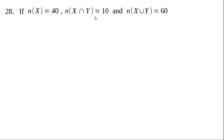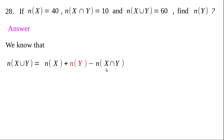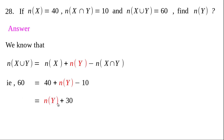Question 28: n(X), n(X∩Y), and n(X∪Y) are given; find n(Y). Write the formula: n(X∪Y) = n(X) + n(Y) - n(X∩Y). Replace the given values: 60 = 40 + n(Y) - 10, so n(Y) + 30 = 60, therefore n(Y) = 30.